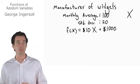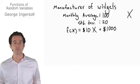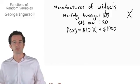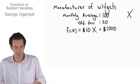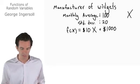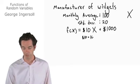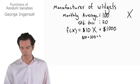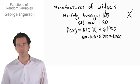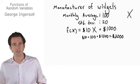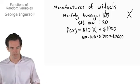Now if we want to say what's the expected value, or what's the expected cost of running this factory, it's just going to be based on the average number of widgets. The expected value of the number of widgets we're going to produce — the average — is going to be the same as the average number of widgets produced. So the expected cost is $10 times 100, which is our average number of widgets produced, plus $1,000, and that's going to be equal to $2,000.